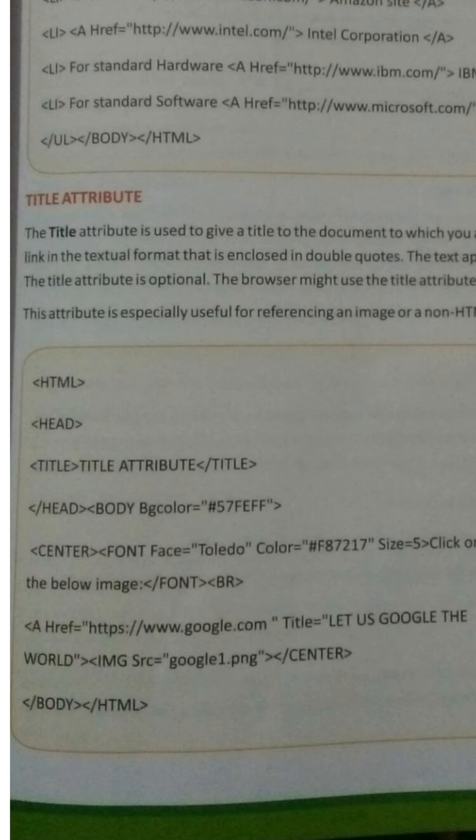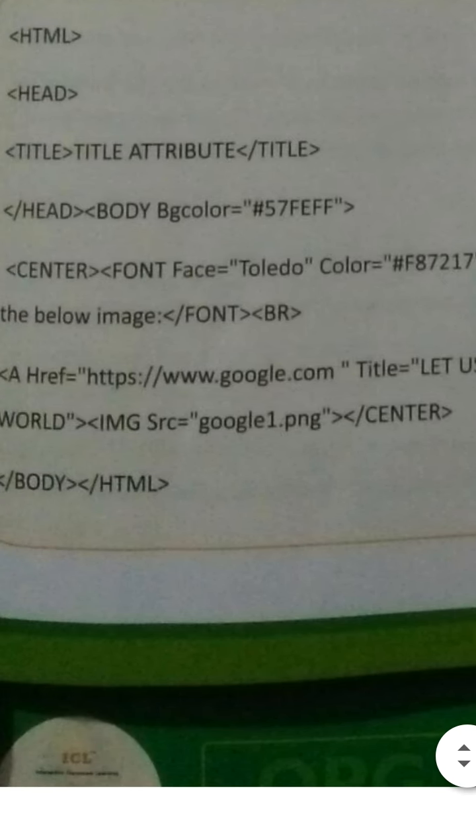Sometimes when we move our cursor on a link, a title appears along with the cursor. That title comes with the help of the title attribute. Whenever we define a link using the anchor tag, we can also define the title attribute inside it. In the example you can see we are defining the title, and it will show the title when you hover over the link.